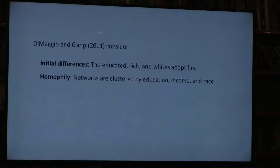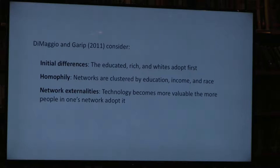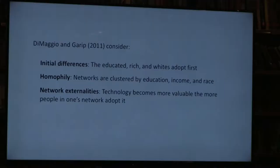Based on many empirical studies, we noted that networks are clustered according to the same characteristics related to adoption—things like education, income, and race affect who we associate with. Technologies like the internet have what economists call network externalities, meaning they become more valuable to you the more people in your network use it. If many friends use email or Facebook, I have more reason to adopt; if nobody I know uses these technologies, I have little reason to adopt.